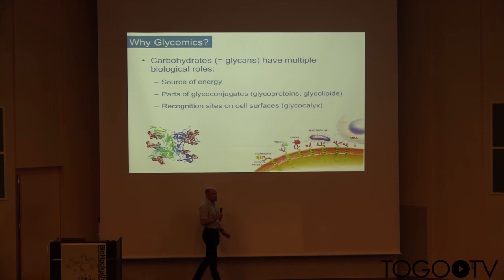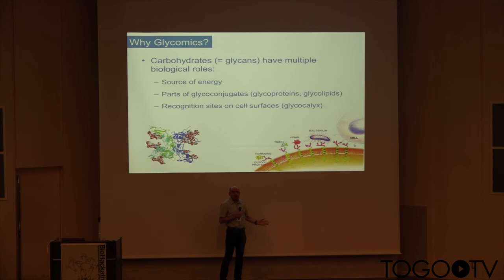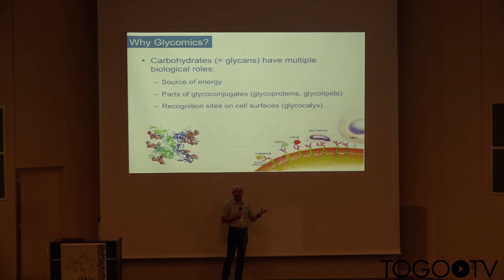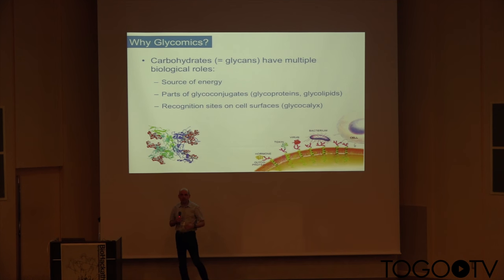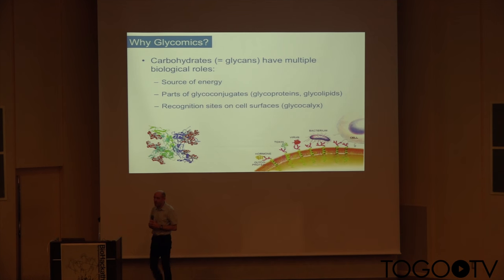For example, what saves us from bird flu is the fact that humans have slightly different carbohydrates on their cells. So alien influenza viruses cannot as easily enter human cells, just because of different carbohydrates.